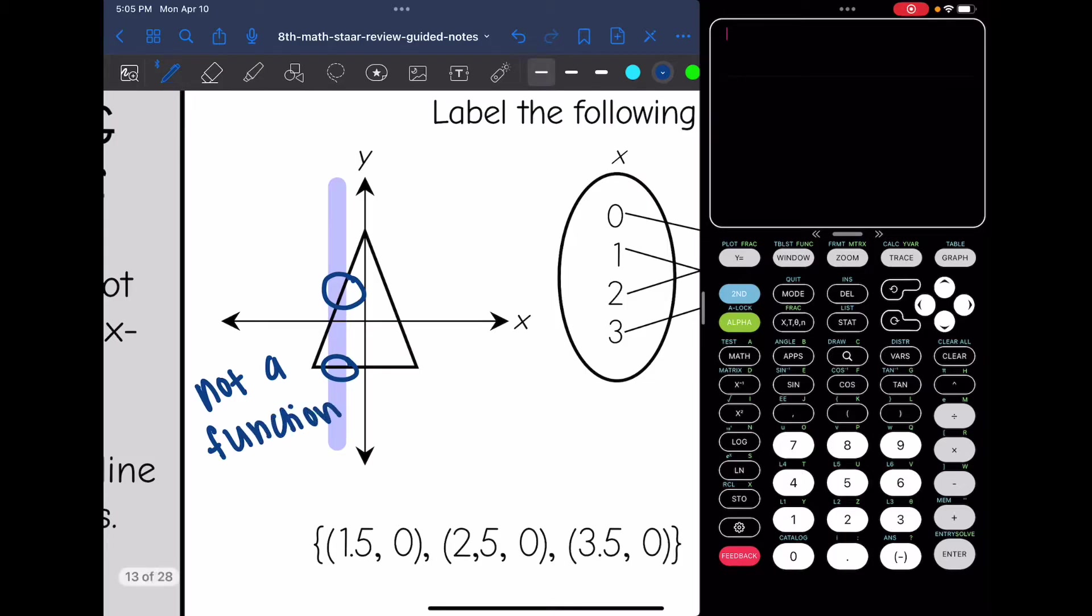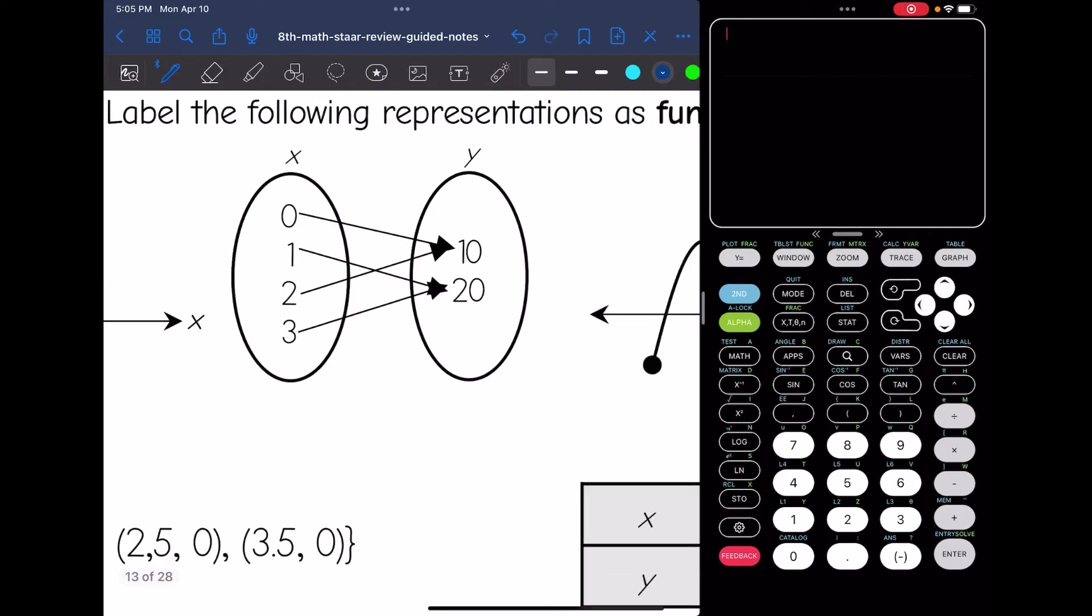Let's look at this mapping. Each of my inputs only has one output. So this mapping would be a function. It does not matter that we have arrows going to multiple outputs. Like 10 has two inputs coming from it. What I care about is each of the input x values only has one output coming from it.